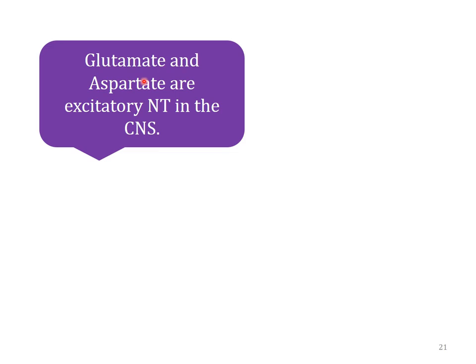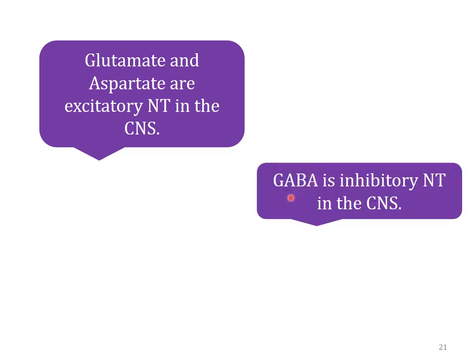The most important excitatory neurotransmitters are glutamate and aspartate. Once glutamate or aspartate is released from the axon terminal of the first neuron, it acts on the post-synaptic membrane of the next neuron and excites it — hence they are excitatory. GABA (gamma-aminobutyric acid) is an inhibitory neurotransmitter — it cuts the impulse rather than passing it.